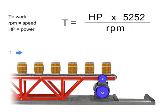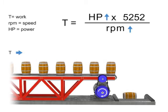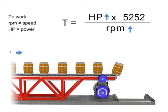Let's say we wish to keep torque constant but want to increase the production of barrels. If the torque or number of barrels on the conveyor belt remains constant but speed increases, then the horsepower of the motor also increases. In other words, a more powerful motor is required to produce the same amount of torque more quickly.